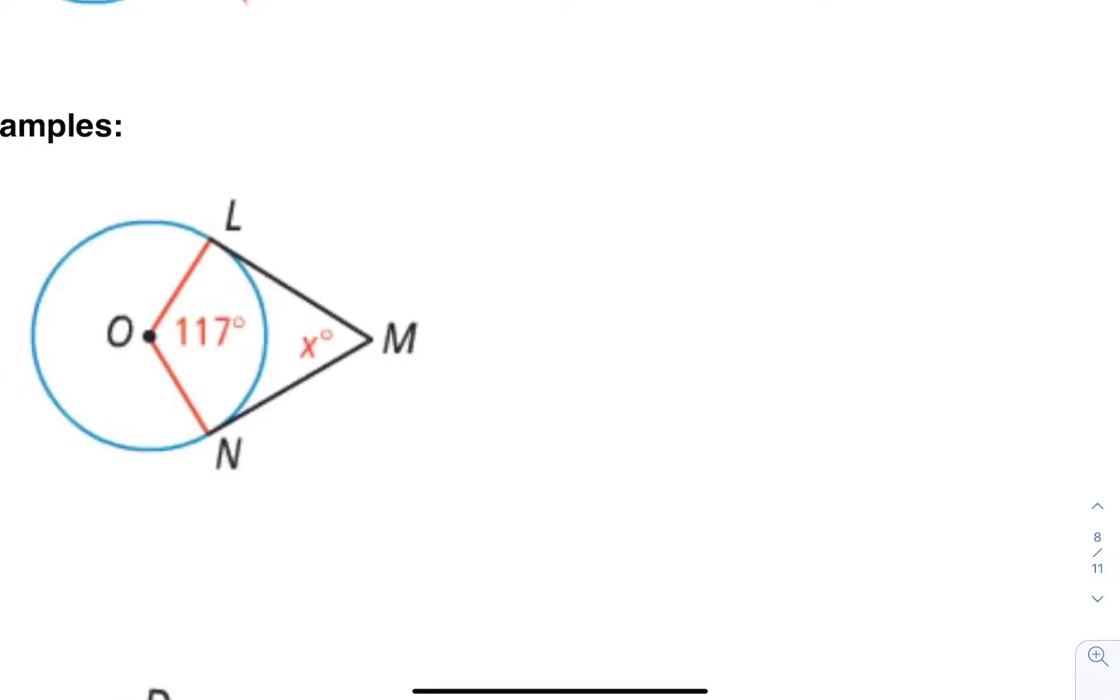I have this line LM, and I have this line NM. If they're tangent, I know that this angle is 90 degrees, and this angle is 90 degrees. How is that going to help me find out what X degrees is?